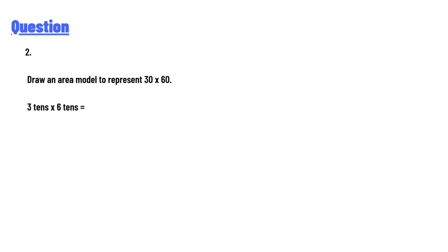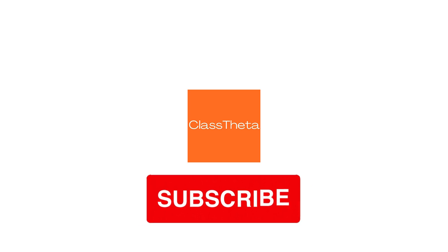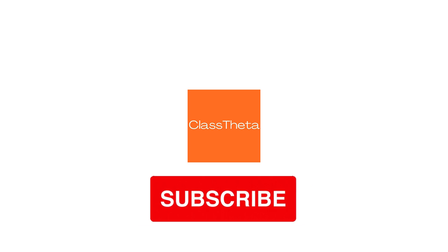Draw an area model to represent 30 multiplied by 60 — 3 tens multiplied by 6 tens. This is the correct answer to the question. If you have any questions, just leave a comment on the video.